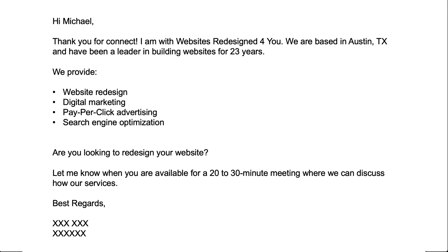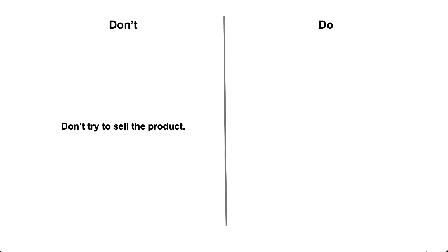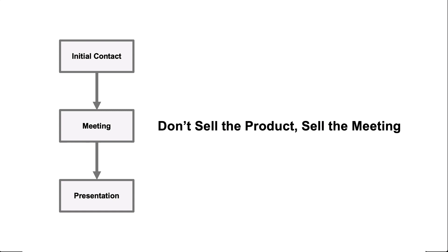Don't sell the product. That salesperson is clearly selling the product — asking 'are you looking to redesign your website?' and 'can we schedule a meeting to discuss my services?' Instead, just try to start conversations. You're trying to take the prospect through the sales process steps. If you're at the initial contact step, the next step is not to sell the product. We're going to have to talk, get to know each other, learn about each other first — that happens in a meeting.